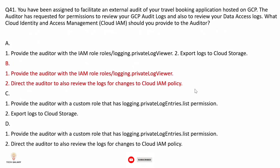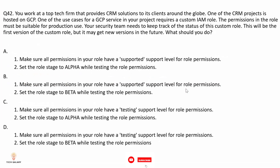Option C: provide the auditor with a custom role that has logging.privateLogEntries.list permission and export logs to Cloud Storage. There is no need for a custom role here — it only lets you list private log entries and does not include permissions to review data access logs or logs for changes to the Cloud IAM policy. Option D similarly uses a custom role with only the list permission, which is also not correct for the same reasons.